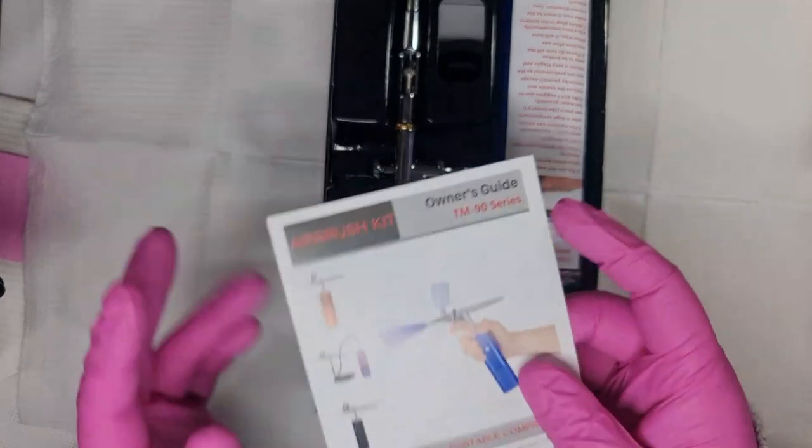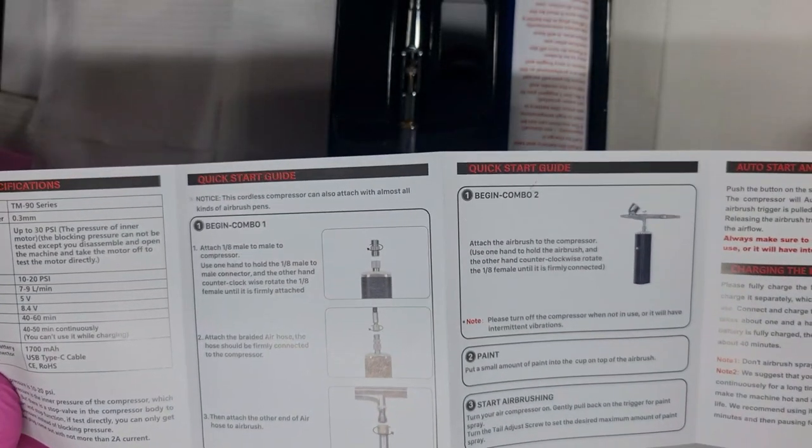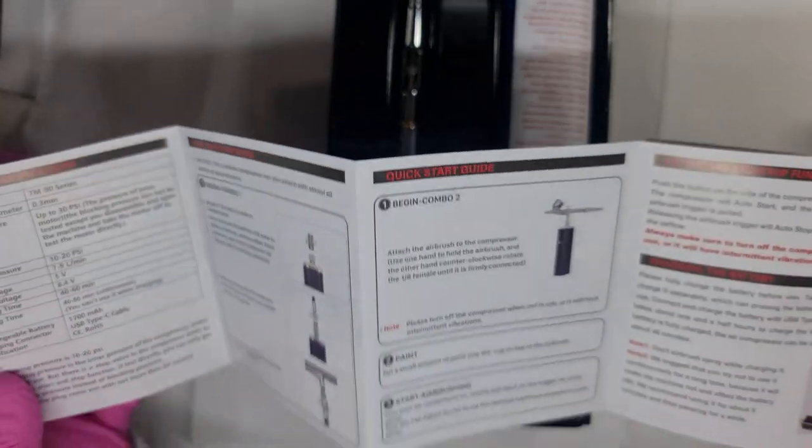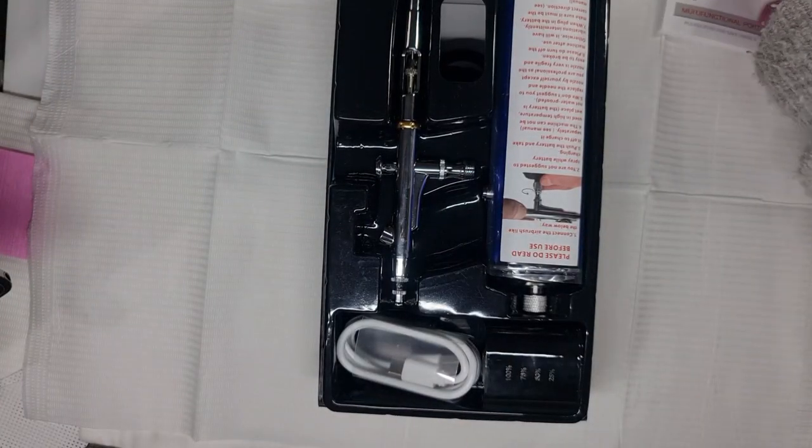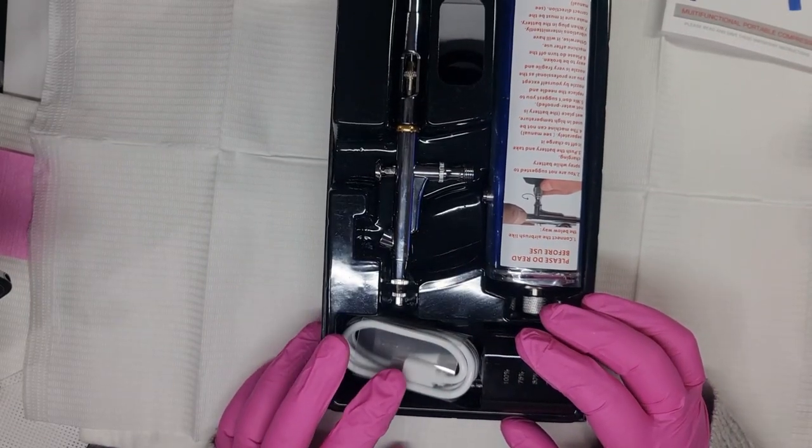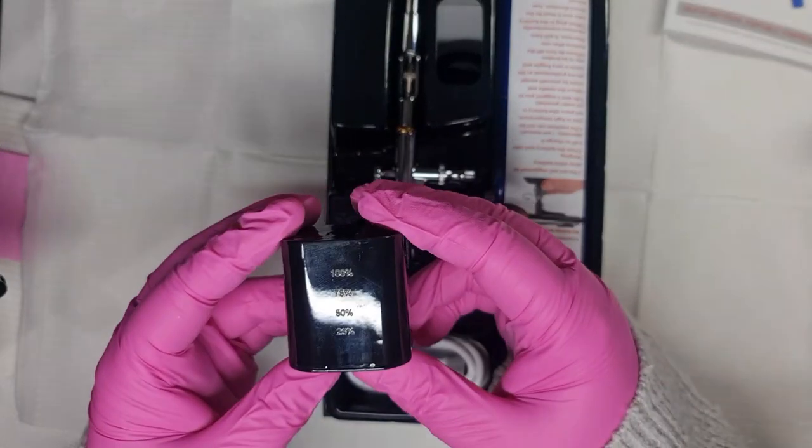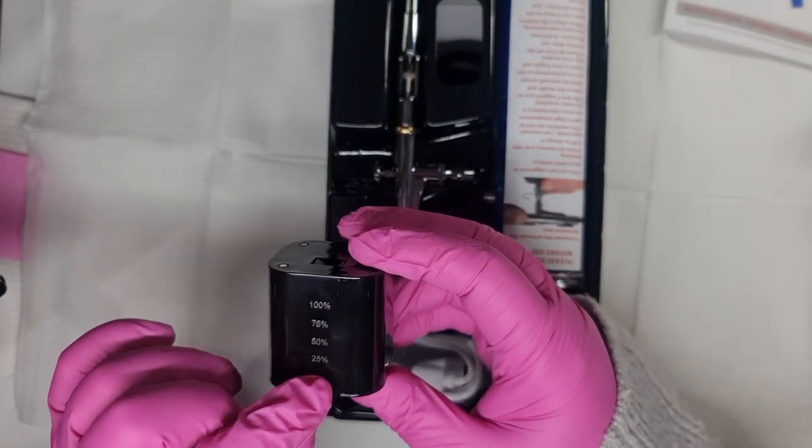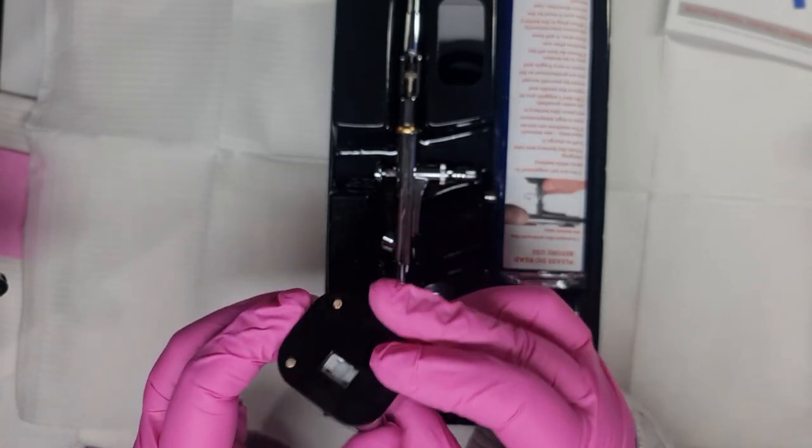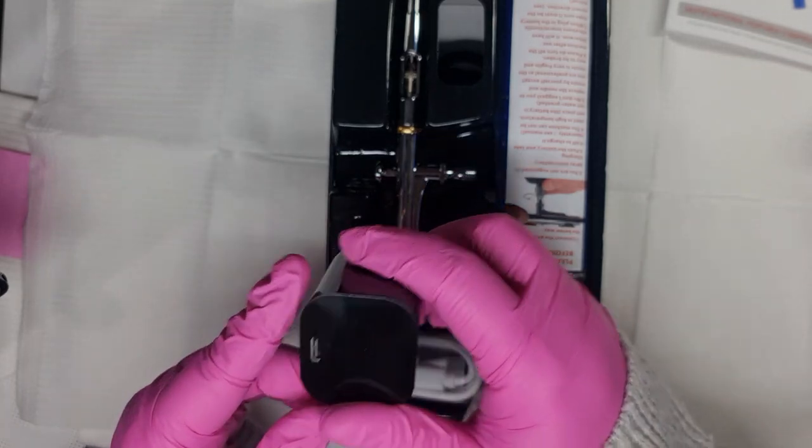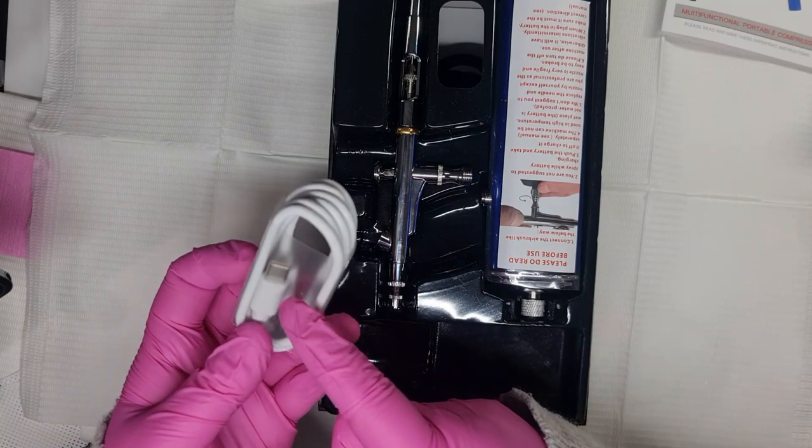It comes with the instructions that tell you how to use it, how to take it apart, and how to clean it. This one is also wireless, so it comes with two batteries. The screen will light up, which I will show you in a second, and they are charged up by a type C USB charger.